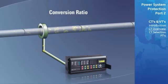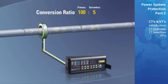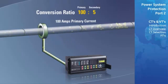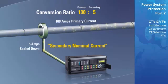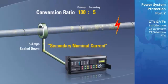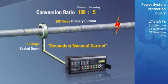In this example, our conversion ratio is 100 to 5, meaning that if 100 amps are passed through the primary phase wire, the CT will scale this down to 5 amps and direct it to the relay via the secondary windings. The 5-amp measure is known as the secondary nominal current. If a fault were to occur on this phase that increases the primary current to 200 amps, then 10 amps would be passed to the relay through the secondary windings consistent with the ratio.